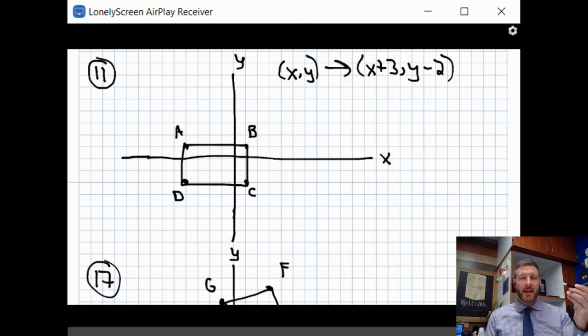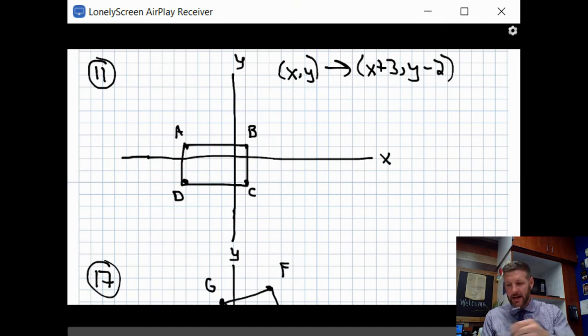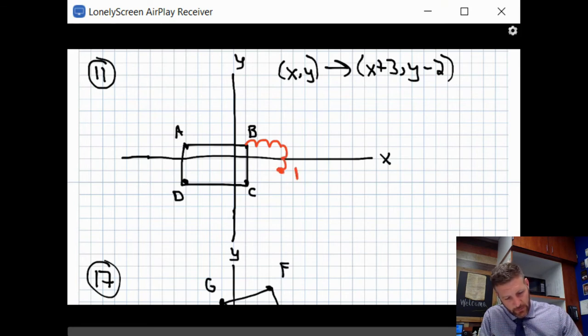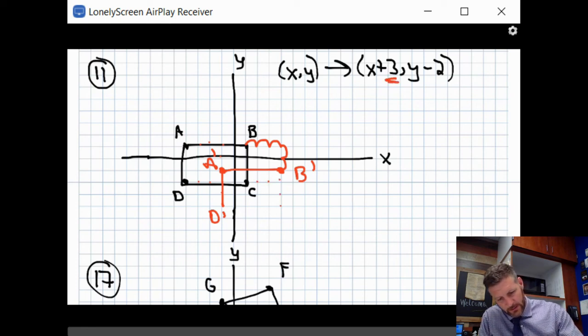That means we're going to take every point. X plus three means it's going three to the right. Y minus two means it's going down two. Because I've graphed it, I'm just going to use the points rather than do any specific math. Take B and go one, two, three to the right and down two. So B prime is right here. Take the same thing with A: one, two, three, and one, two. So A prime is right here. D would be one, two, three, one, two. So D prime is right down here. And then C prime is one, two, three, one, two. Over three to the right, negative two down. That is C prime right there.